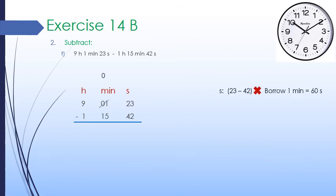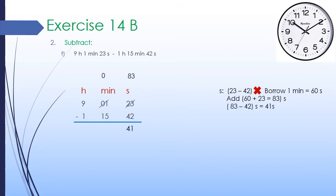We borrow 1 minute from the minute column. Since 1 minute equals 60 seconds, we have borrowed 60 seconds. Earlier we had 1 minute; after borrowing, 0 minutes are left at the minute column. In the second column, we add 23 seconds and 60 seconds to get 83 seconds. We subtract 42 seconds from 83 seconds to get 41 seconds, which we write under the second column.